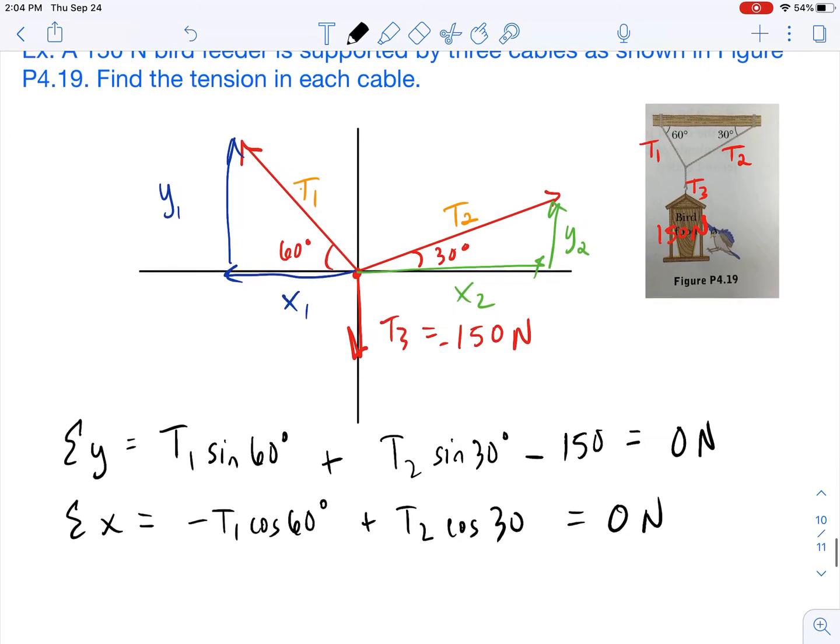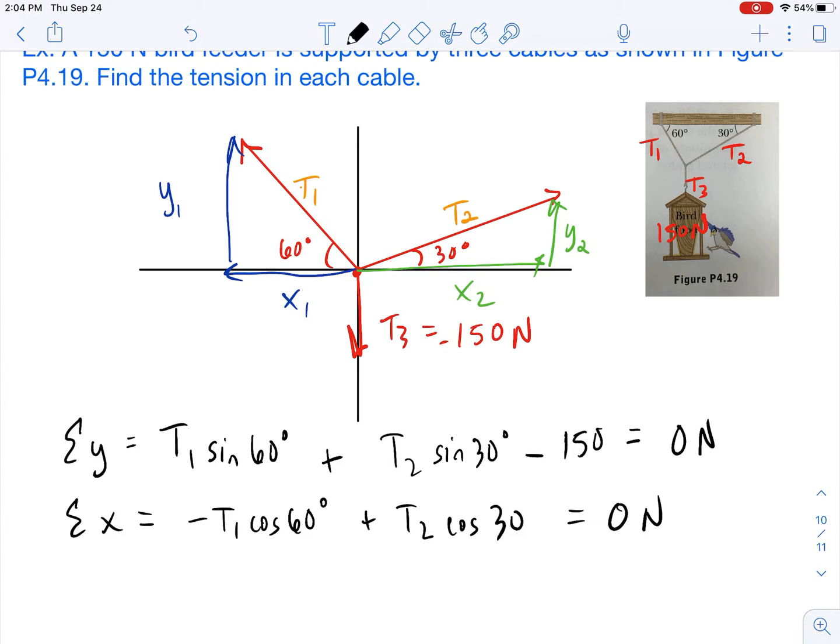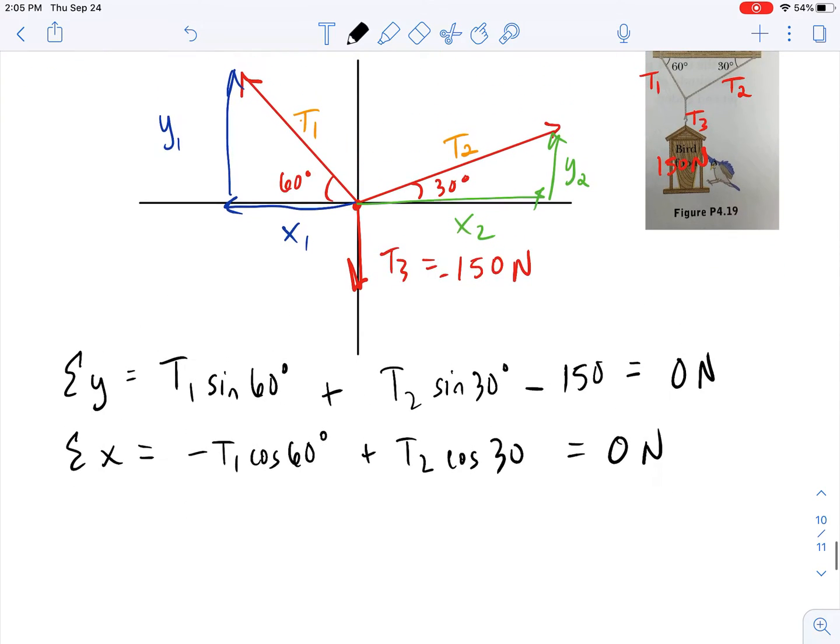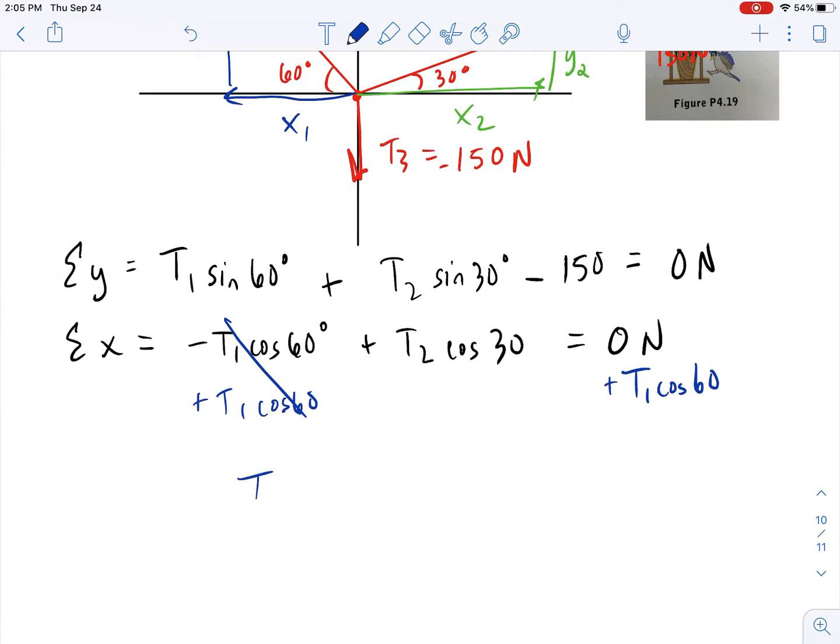All right, so now we have two equations and we have two unknowns. And so what we have to do at this point is we have to make some sort of substitution, all right, where we can eliminate the two unknowns and make it just one unknown. All right, and the way that we're going to do that is we're going to use this total X component equation where we can swing this T1 across. So we can add T1 cosine of 60 to this side.